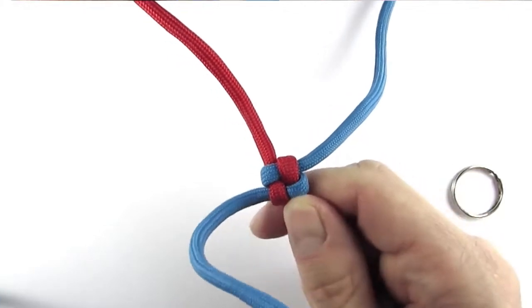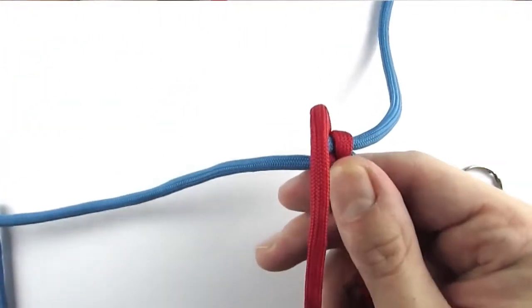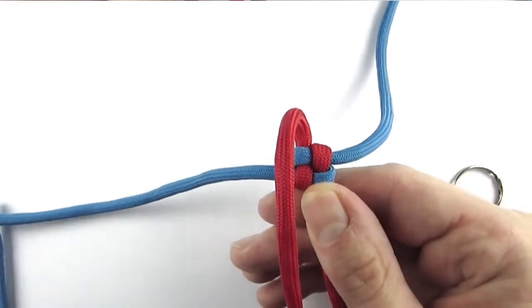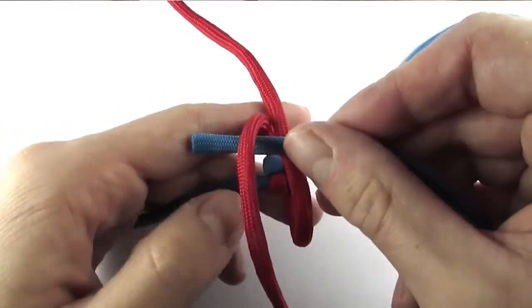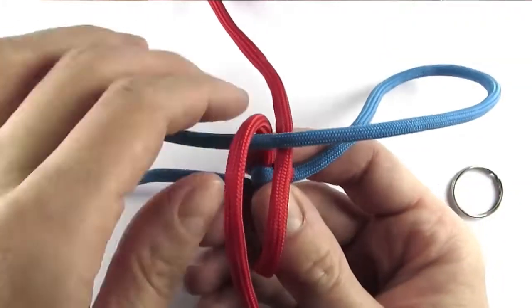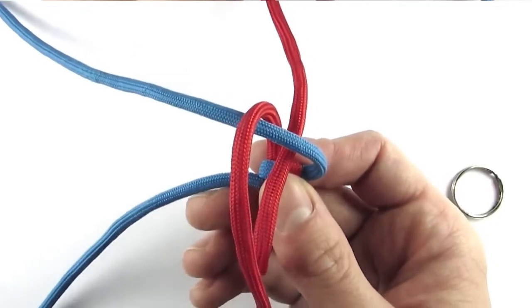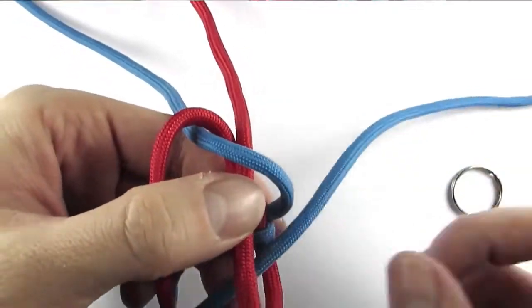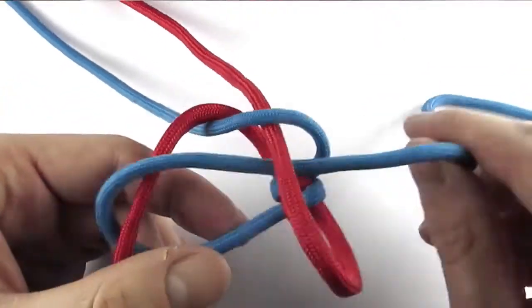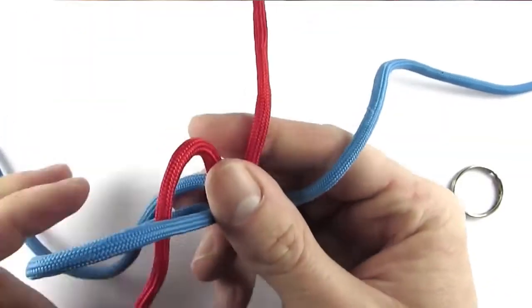We can then continue the second one by again folding the cords over it and then weaving the side cords over under with one cord end, and then with the other cord end we go again over and then under like this, and then we tighten this knot up.